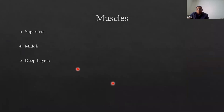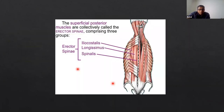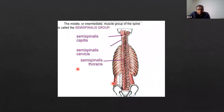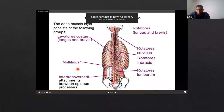The muscles of the back have three main layers: a superficial layer, a middle layer, and a deep layer. The superficial layer is the erector spinae muscle, which runs all the way from the occiput down to the sacrum and connects at multiple levels. The middle group is called the semispinalis — named the capitis around the head, cervicis around the neck, and thoracis in the thoracic spine. The deep muscles are the rotators and the multifidus.